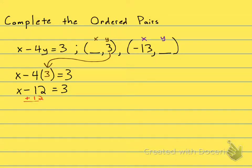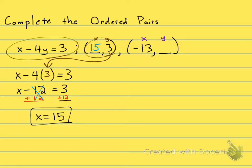I will add 12 to both sides, and X equals 3 plus 12 is 15. So I have completed this ordered pair. This ordered pair right here is (15, 3) and this is a point on this line.